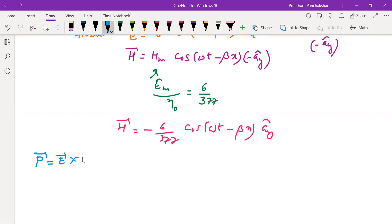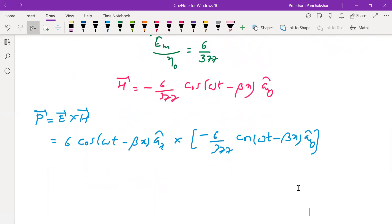Poynting vector instantaneous is given by E cross H: 6 cos(ωt - βx) â_z cross product with -6/377 cos(ωt - βx) â_y. Cross product to be evaluated.